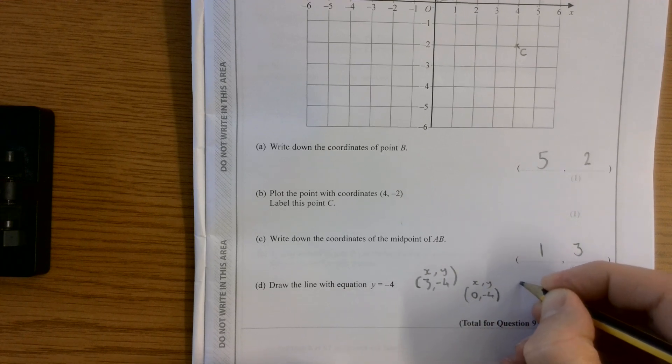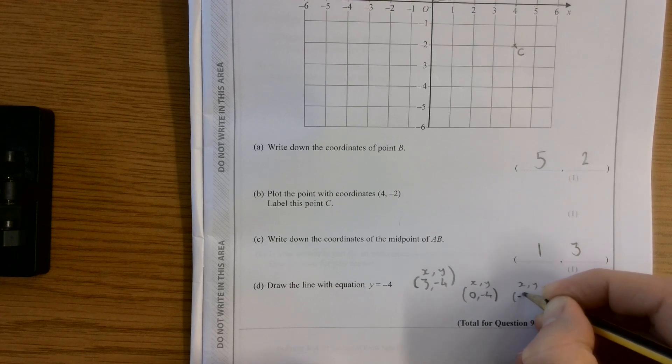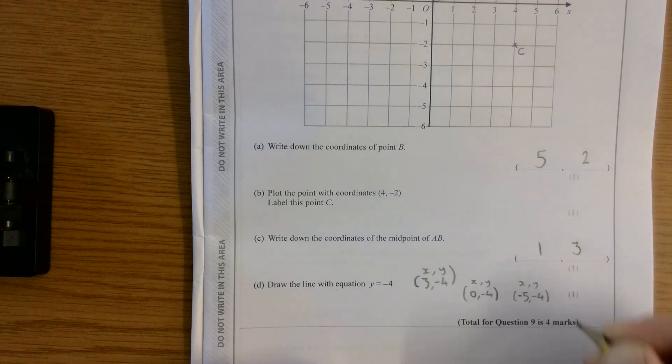And I'm going to pick another point where my y value is negative 4. I'm going to pick negative 5, negative 4.